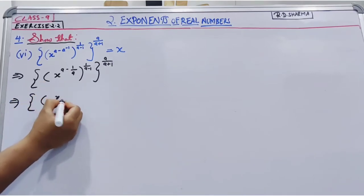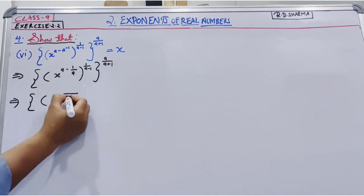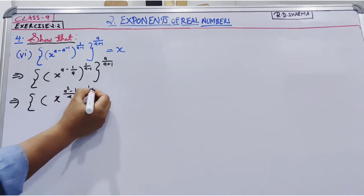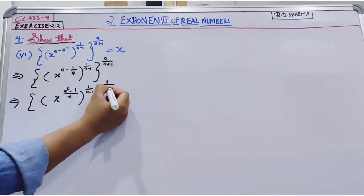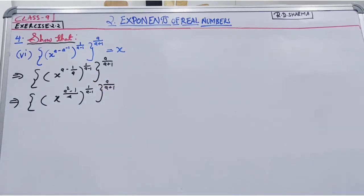Now x to the power, if we take the LCM this will be a, so a into a will be a square minus 1 to the power 1 divide by a minus 1. So x to the power a, a plus 1.